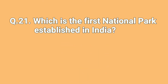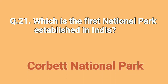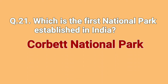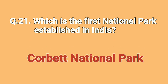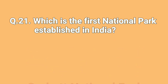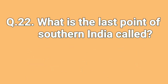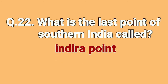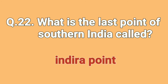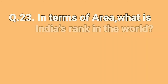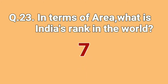Which is the first national park established in India? Corbett National Park. What is the last point of southern India called? Indira Point. In terms of area, what is India's rank in the world? 7th.